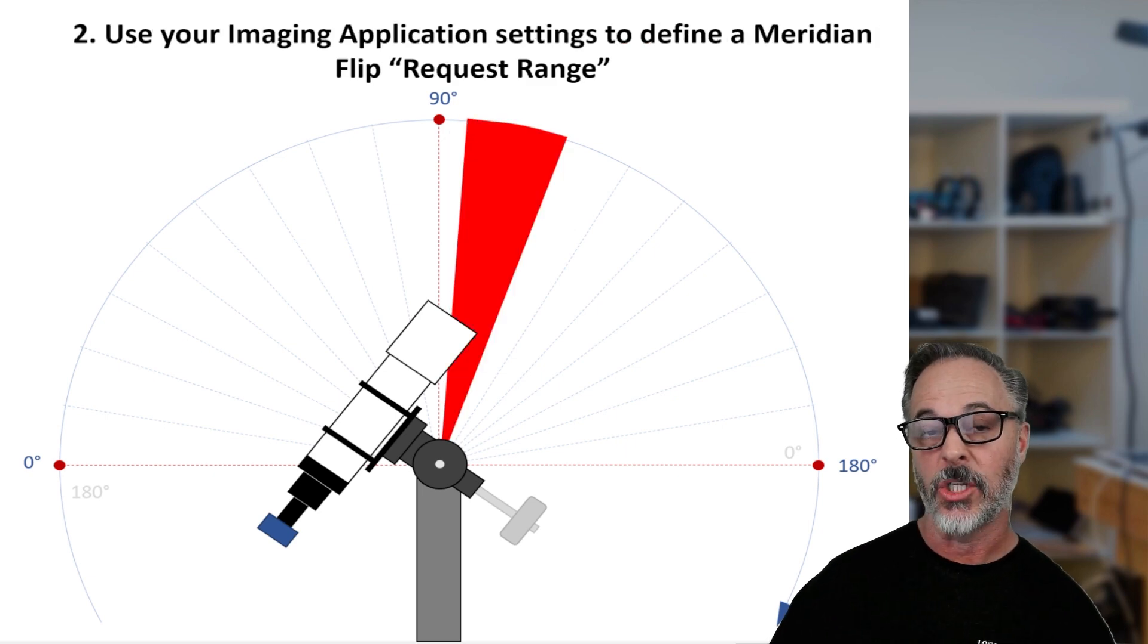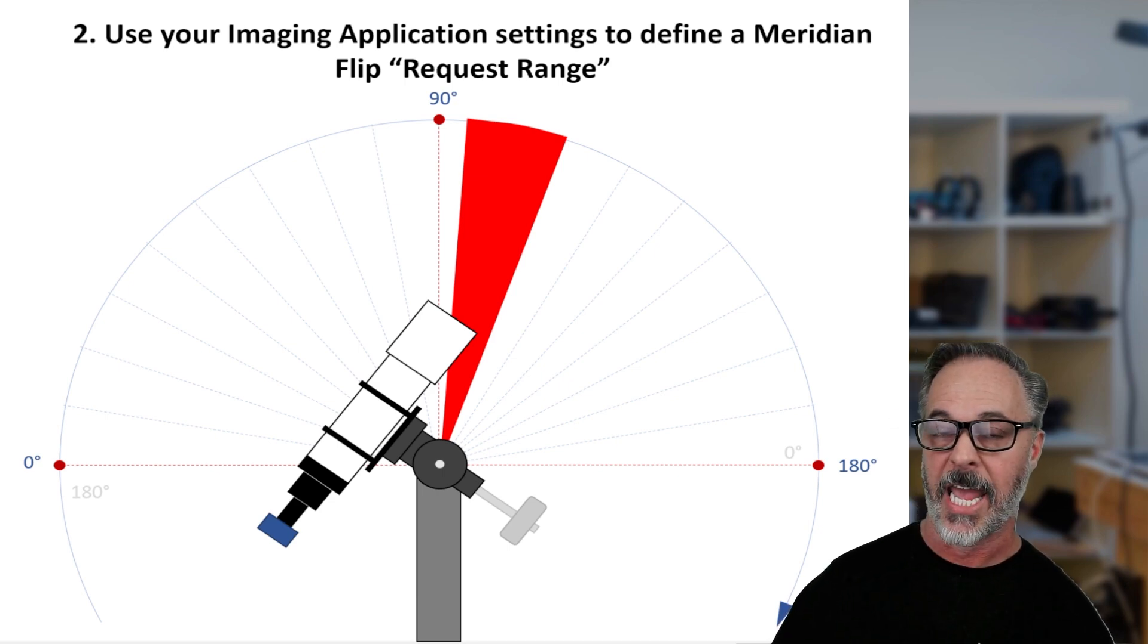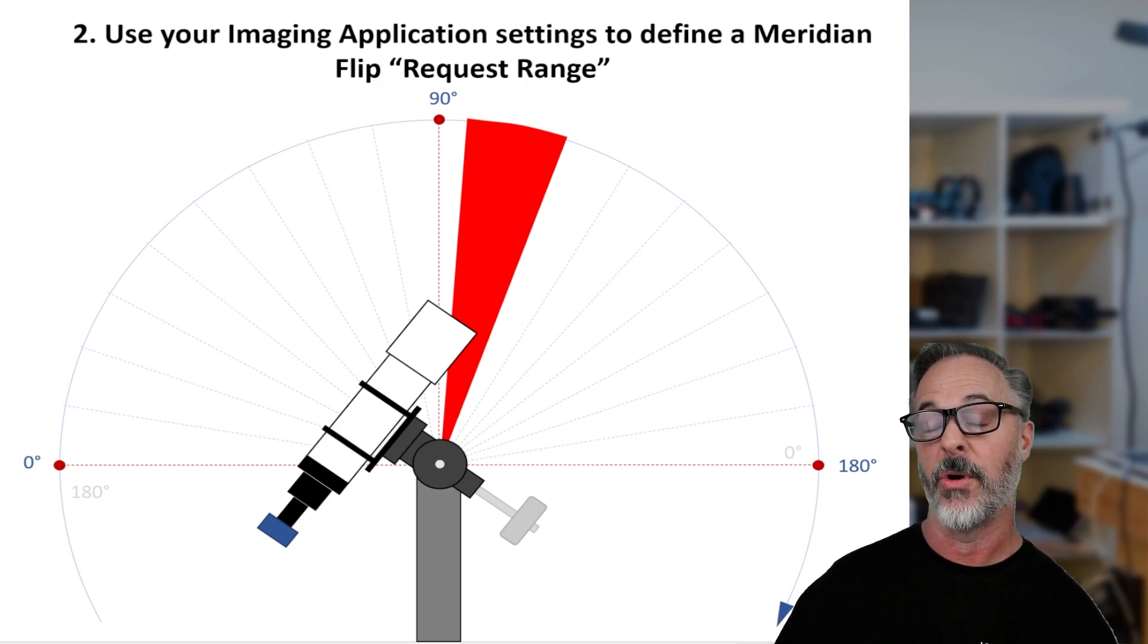The second thing is we are then going to use the imaging application and define those settings to create what I call a meridian flip request range. And this is the range of time or the range of sky angles that the application is going to at some point request a meridian flip.